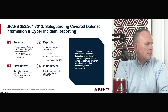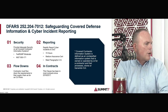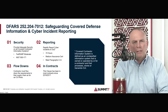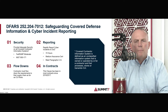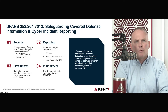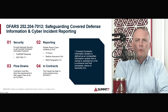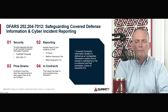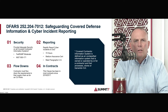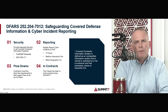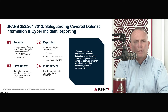Is there an expectation for most contracts to be solicited with a particular CMMC level? Yes — based on the type of data managed as part of that contract, a specific level will be identified. If the contract is dealing with FCI, or federal contract information, the expected level is CMMC level one. If it's dealing with controlled unclassified information, the expectation is CMMC level two. Potentially there could be CMMC level three contracts, though the final requirements for level three aren't yet available, and the numbers of level three contracts are expected to be very low.